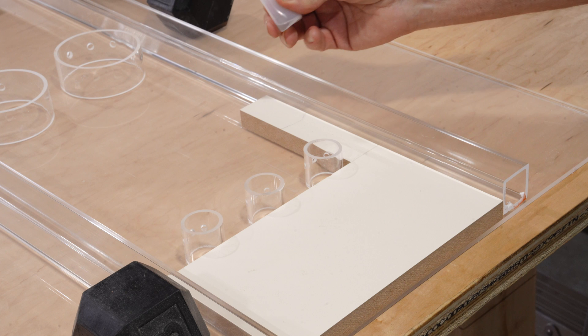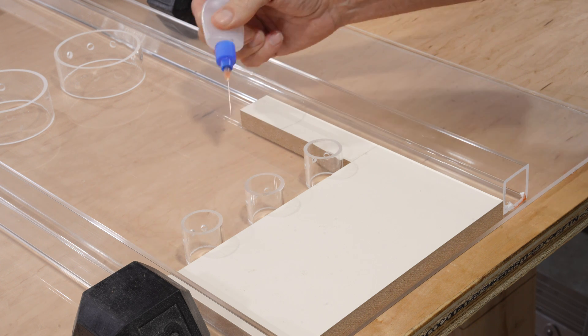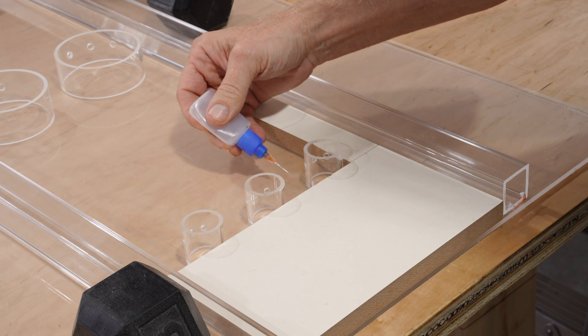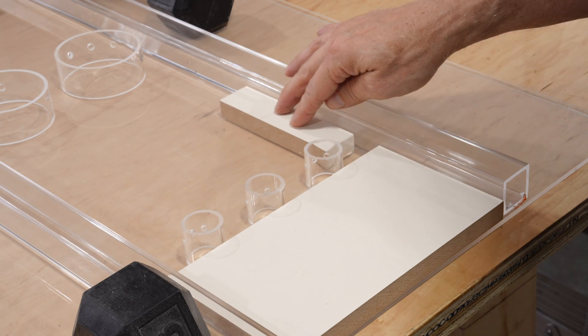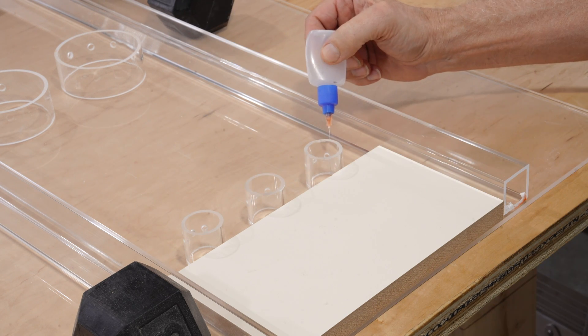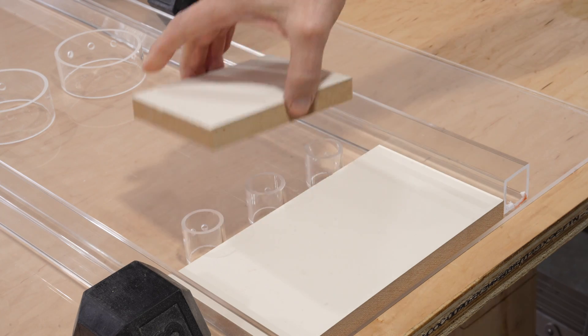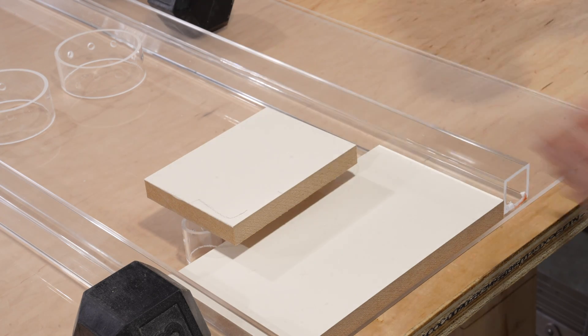When using this style of applicator, you need to squeeze the air out, then stop squeezing when you tilt it down toward the joint. This will prevent any solvent from dripping out. If any weld-on does drip on the panel, don't wipe it off. Letting it evaporate will cause some damage, but wiping it will create a total mess.